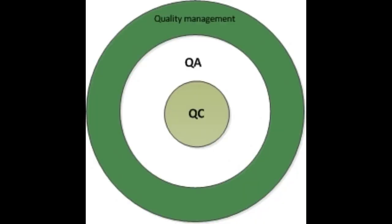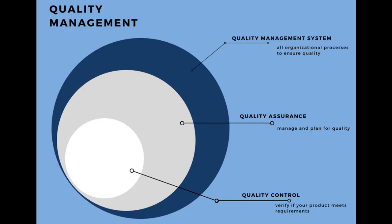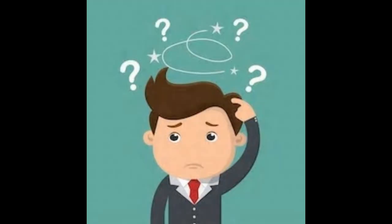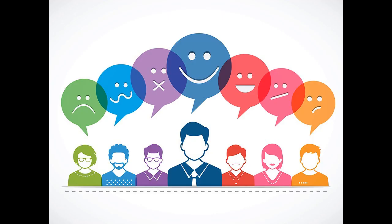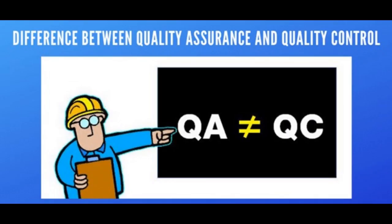Quality management includes activities that are wider than quality assurance, and quality assurance includes activities that are wider than quality control. Quality control and quality assurance are two terms that are often confused with one another. This is mainly because both of them are important aspects of quality management that ensure that the products or services are of high quality and meeting the expectations of customers. Having said that, there are a number of differences between these two activities.